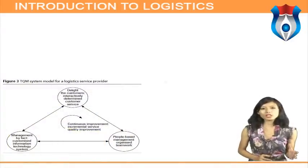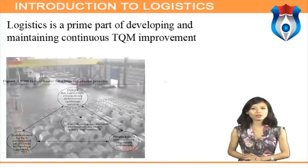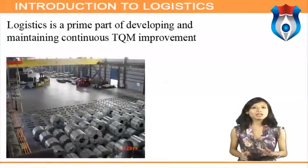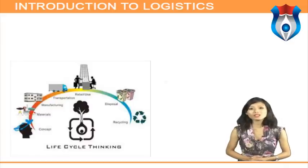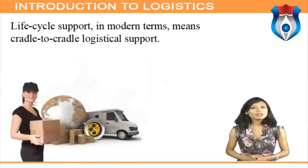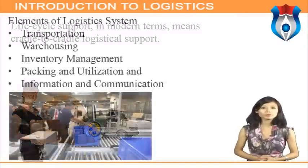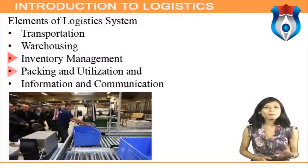Quality improvement — Total Quality Management (TQM) has become a major commitment throughout all facets of industry, and logistics is a prime part of developing and maintaining continuous TQM improvement. Life cycle support — the final logistical design objective — means that few items are sold without some guarantee of performance over a specific period. In modern terms this means cradle-to-cradle logistical support.